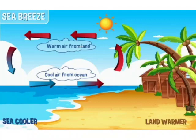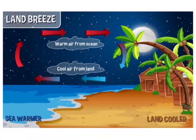At night, the land cools down faster than the water in the sea. So the water is warmer than the land. The warm air above the water rises up. The cool air over land rushes in to take its place. This is called the land breeze.